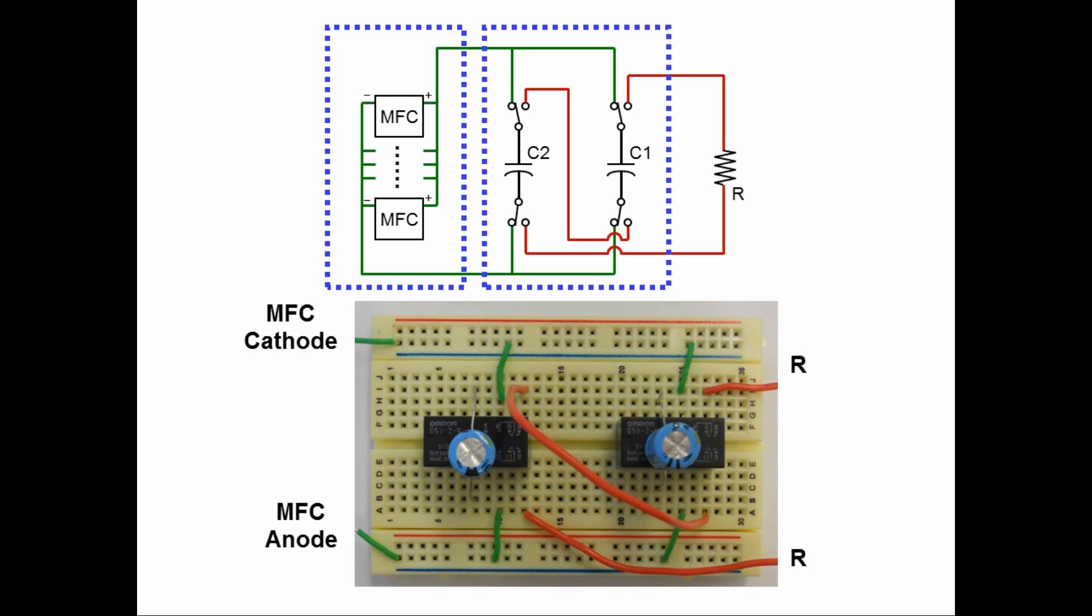In the middle, we have a capacitor circuit, which is identical to the picture shown below. And on your right-hand side, we have an external resistance.